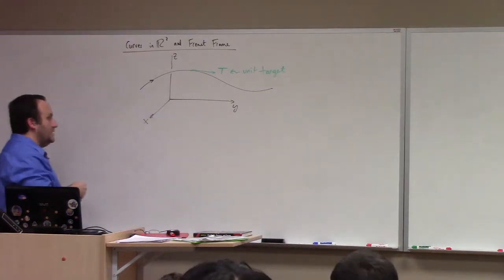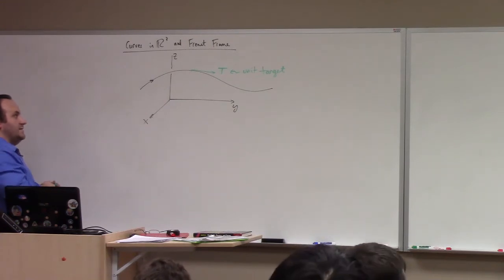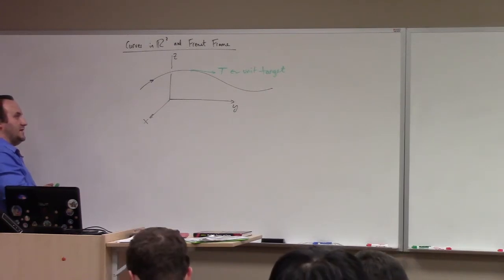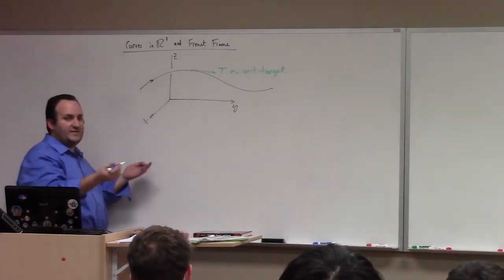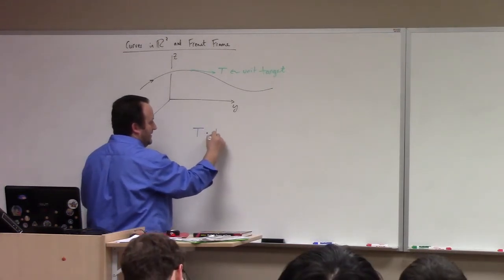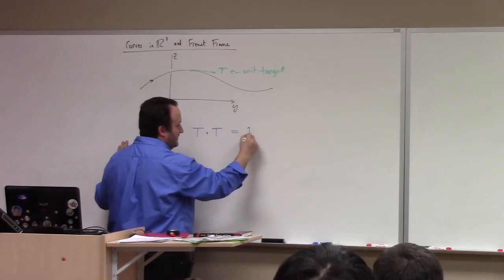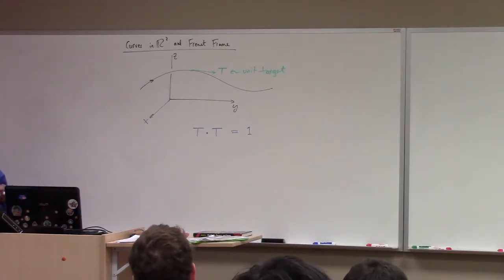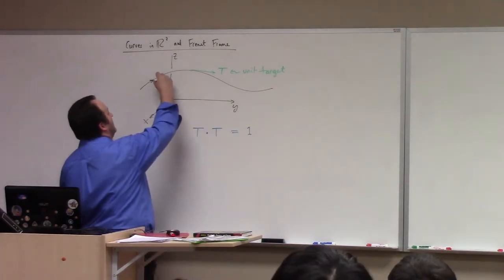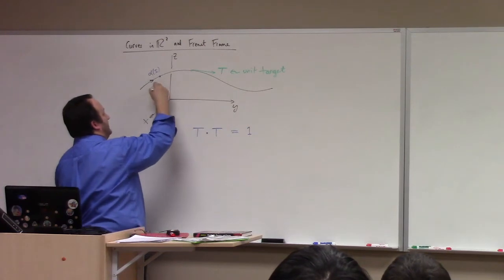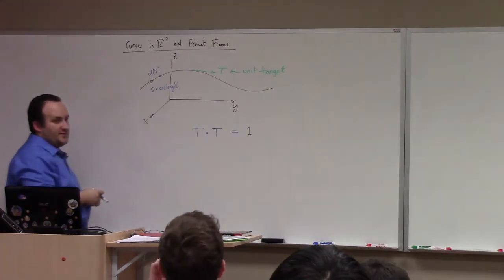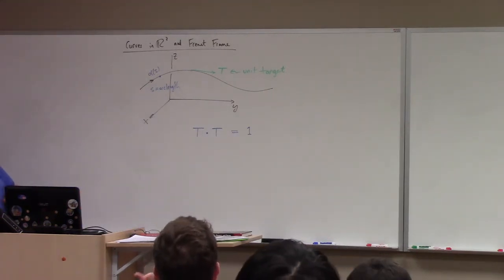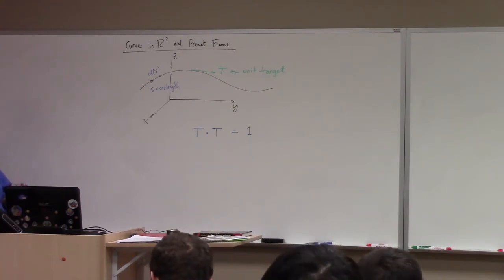So, the unit tangent vector. What's, what different, what equation does that satisfy? It satisfies T dot T equals 1, right? It's a unit tangent vector. And, technically speaking, I should probably say that I'm using arc length. So, this would be like alpha of s. So, s is arc length.